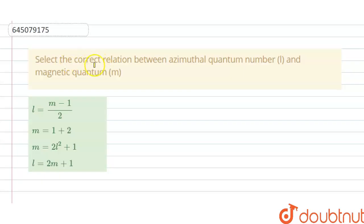Hello students, today our question is select the correct relation between azimuthal quantum number L and magnetic quantum number M. A, B, C, D options are given here.